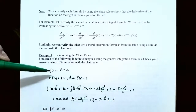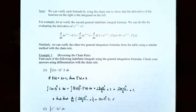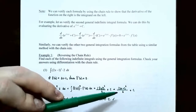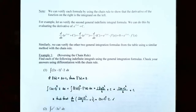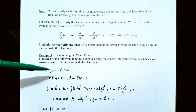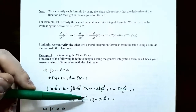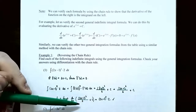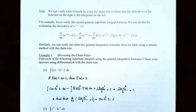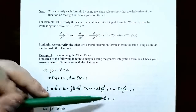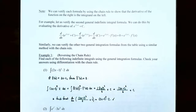That's the family of antiderivatives for this integrand. Keep in mind you can always check your answer: if you take the derivative of the family of antiderivatives, you should get the original integrand. So check that the derivative with respect to x of 2x minus 1 to the sixth power divided by 6 plus c is equal to the original integrand, 2x minus 1 to the fifth power times 2, using the chain rule.